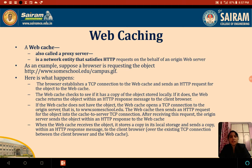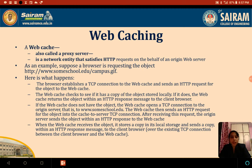We will take an example to see what is web caching and how it is going to help users in the network. Suppose a browser is requesting an object — for example, you go to your browser and type a Google search like 'how many states are there in India.' This is the HTTP request you are giving to the Google server. The browser establishes a TCP connection to the web cache and sends the HTTP request for the object to the web cache.